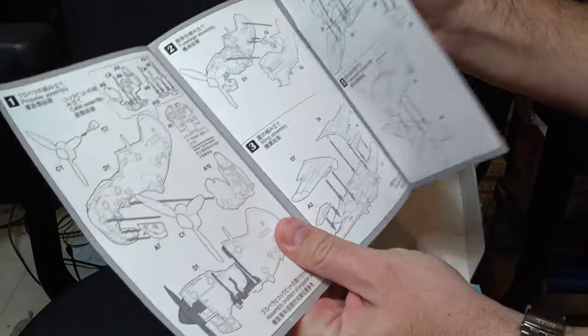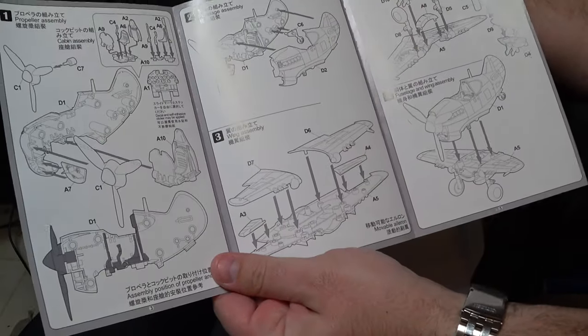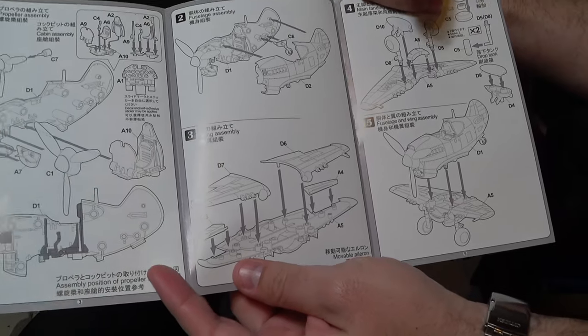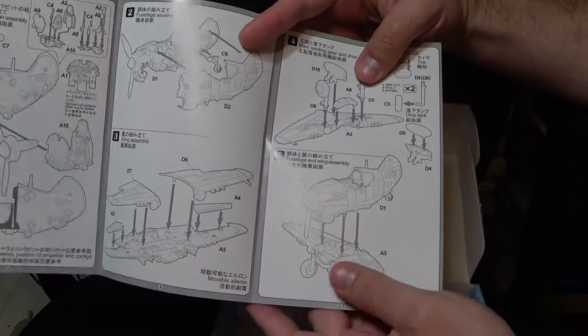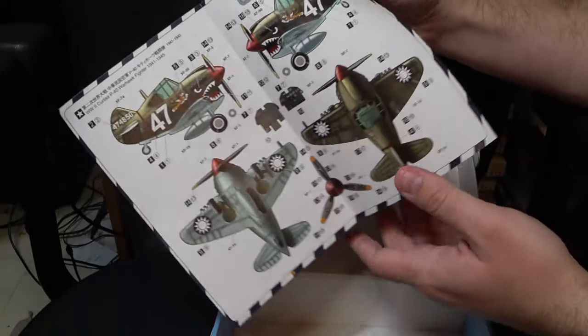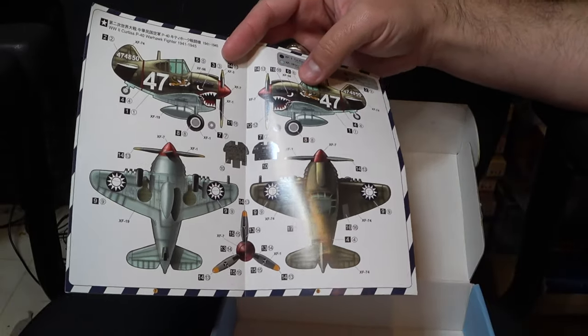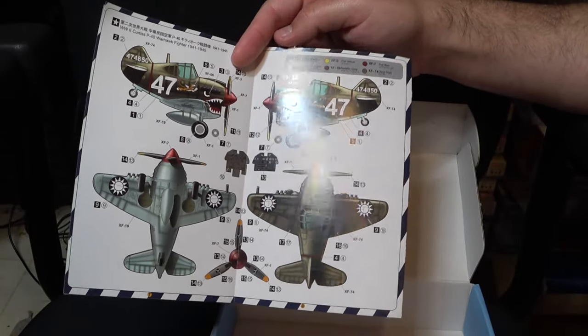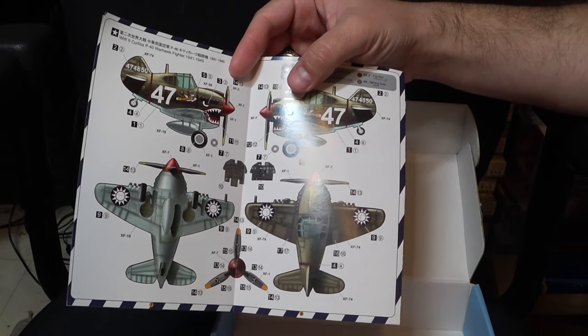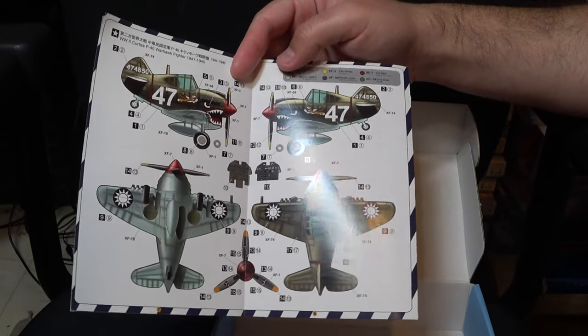Now getting into instructions, there's no real surprises here as this is a more basic kit. Basic cockpit buildup, and from there, it almost falls together. You only get one marking option though. So you may need to get creative if you want to do something else. But personally, I think this is more than enough for this guy.